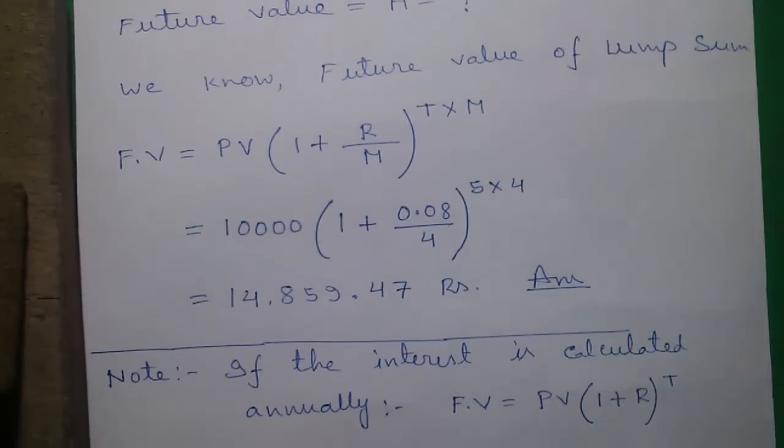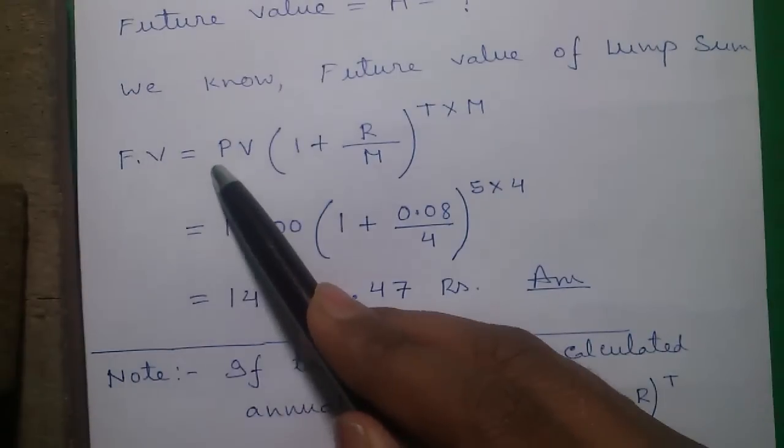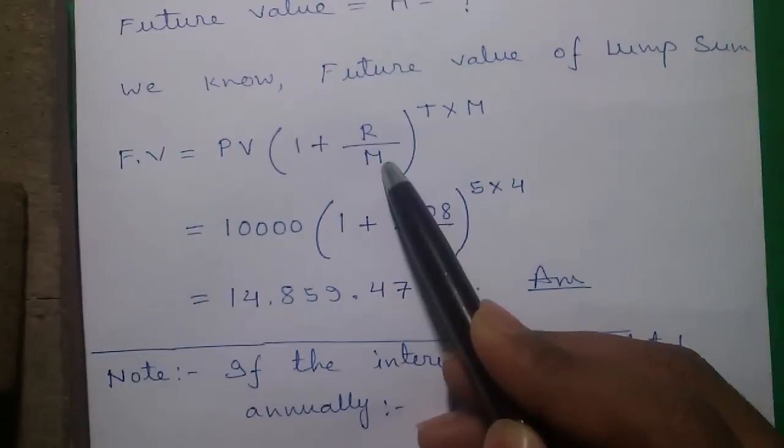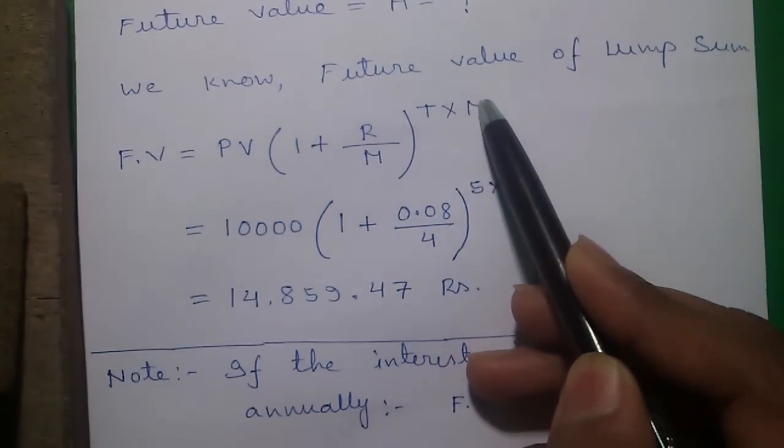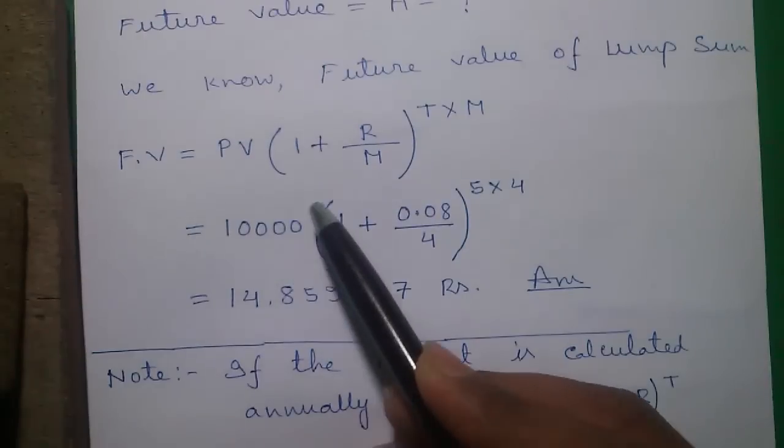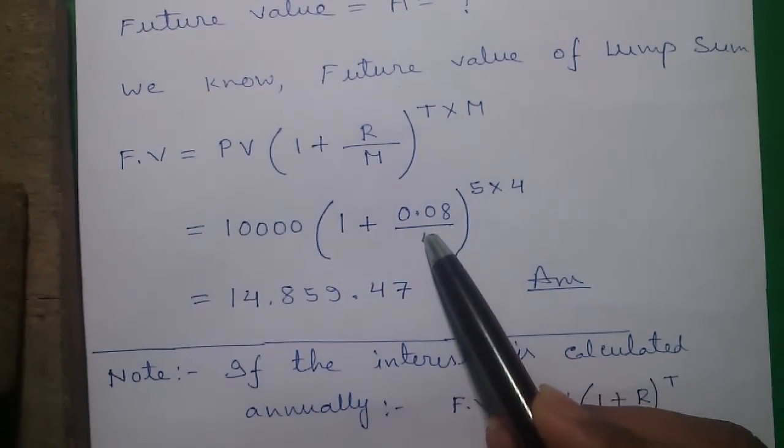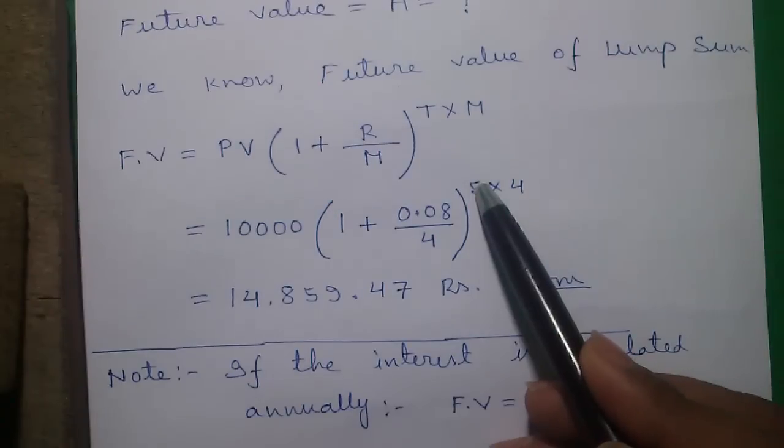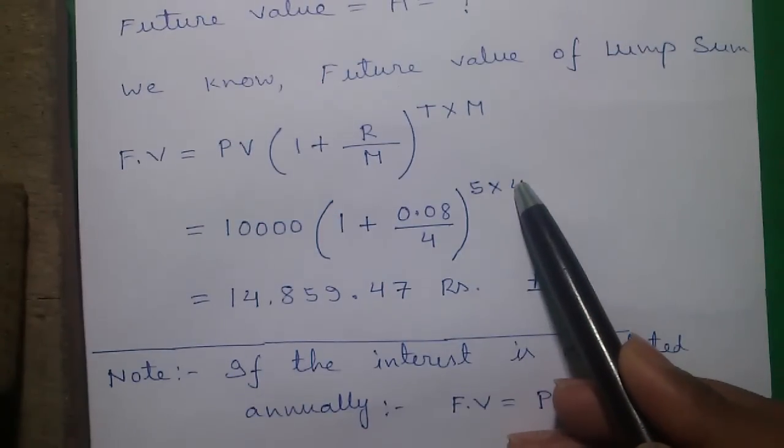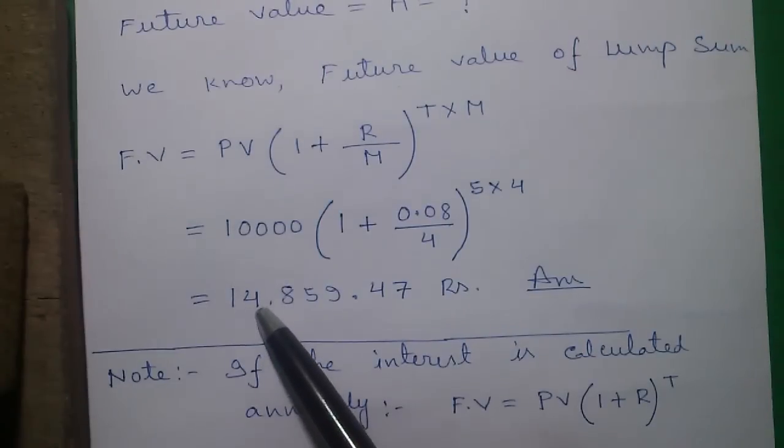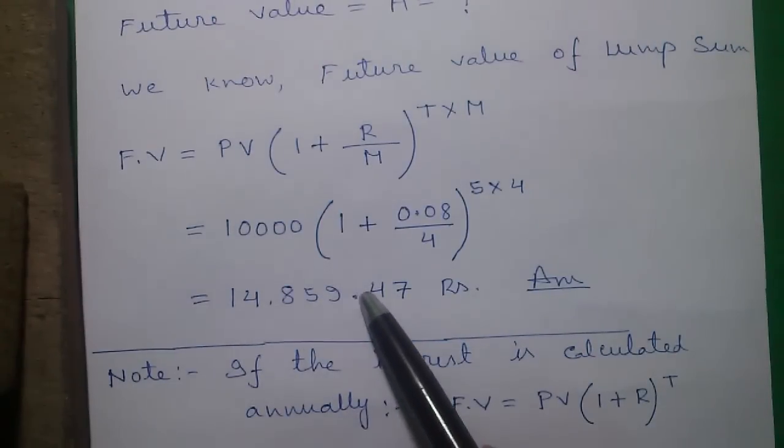So the future value equals to present value into 1 plus R divided by M to the power T into M, which is 10,000 into 1 plus 0.08 or R divided by calculated quarterly, that is 4 times per year, into our T is 5 years into M or 4, which is equal to 14,859.47.